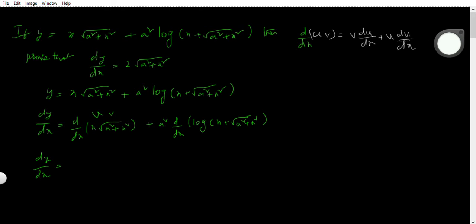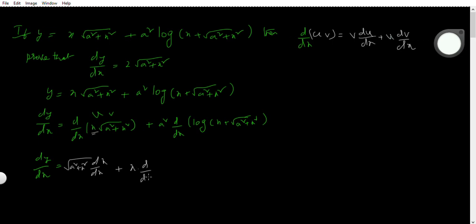Here, let u = x. Take the derivative of x, which gives d/dx of x, and multiply by root over a² + x². Then plus, keep x and take d/dx of root over a² + x².